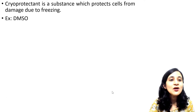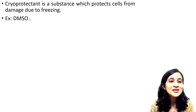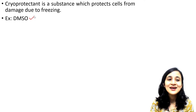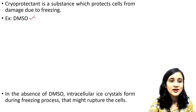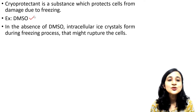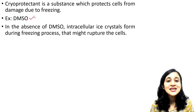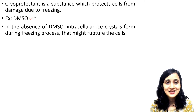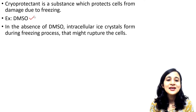An example of a cryoprotectant substance is DMSO. Please try to remember this: DMSO is the cryoprotectant. Now, in the absence of DMSO — when DMSO is not available — intracellular ice crystals form during the freezing process that might rupture the cells.